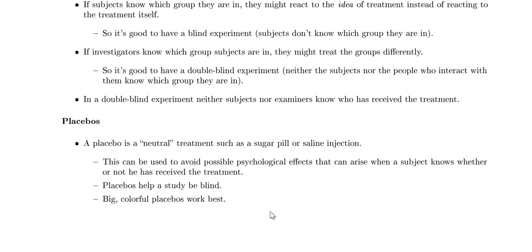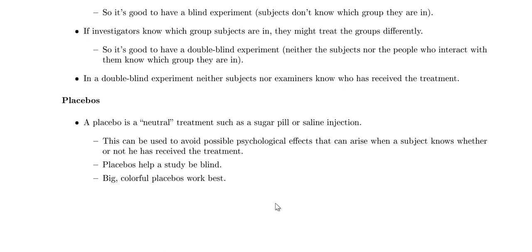And finally, a placebo. A placebo is a neutral treatment such as a sugar pill or saline injection that doesn't do anything. It's used to avoid possible psychological effects that arise when a subject knows whether or not they've received the treatment — because oftentimes just thinking you're getting help will make you feel better. Placebos help a study be blind. If we give everyone a pill, whether it's a placebo or the actual treatment, it helps keep the study blind. Interestingly, big colorful placebos work best as far as people believing they're getting help.